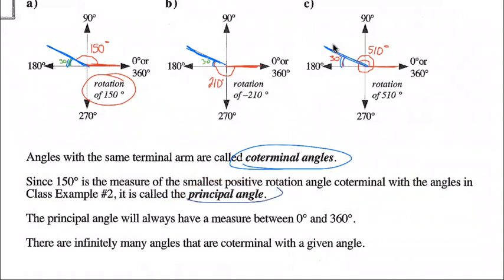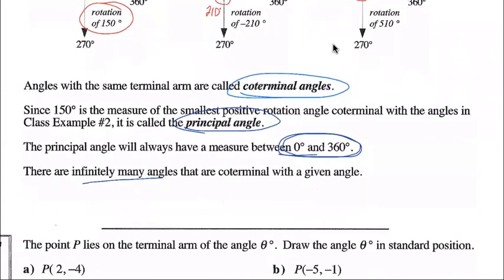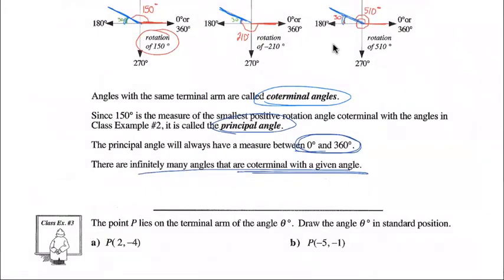The principal angle will always have a measure between zero and 360 degrees. There are infinitely many angles that are coterminal with any given angle — you can just keep going around the circle, whether positive or negative.